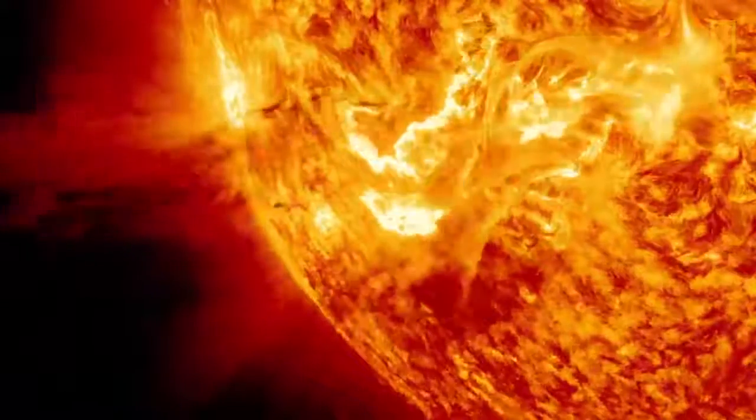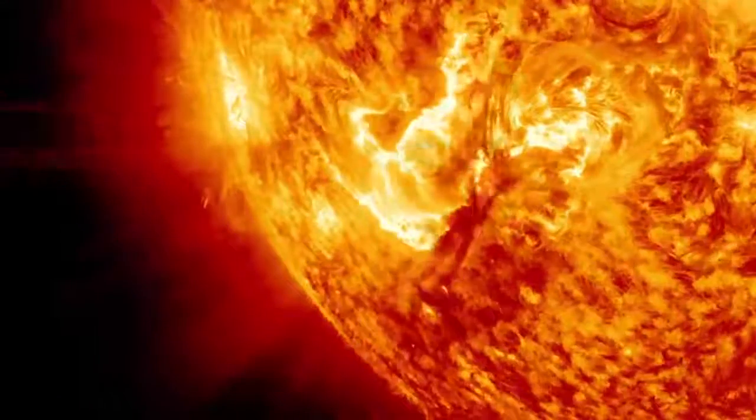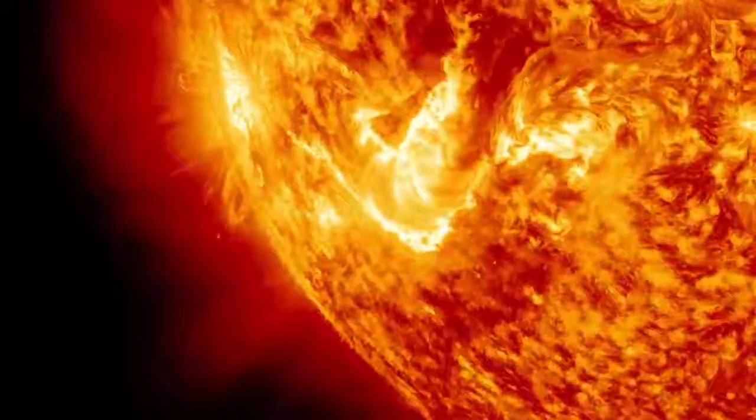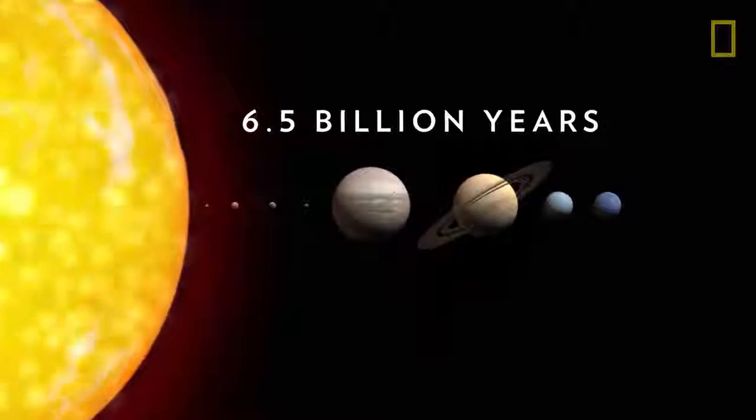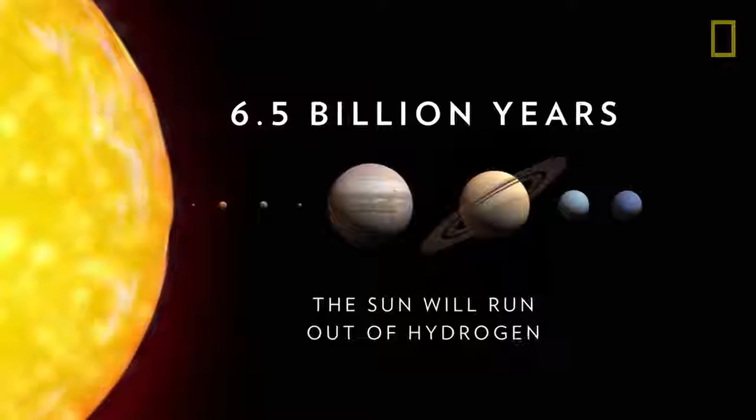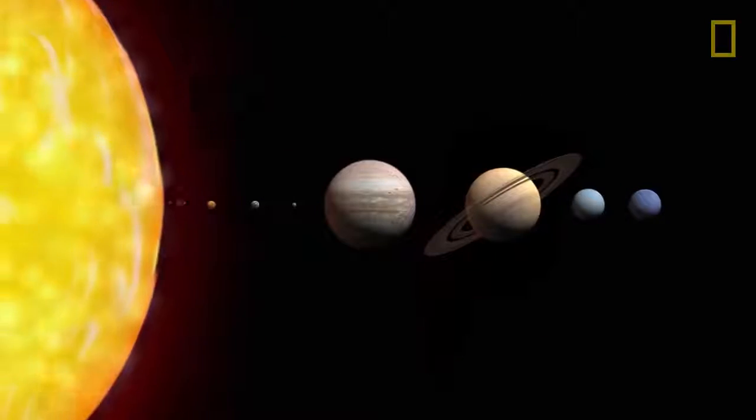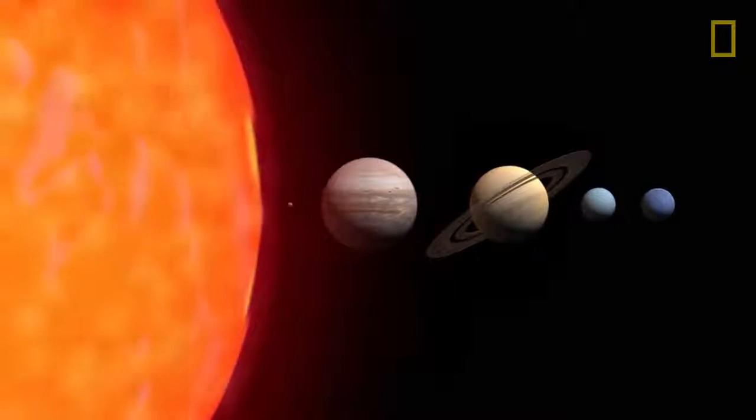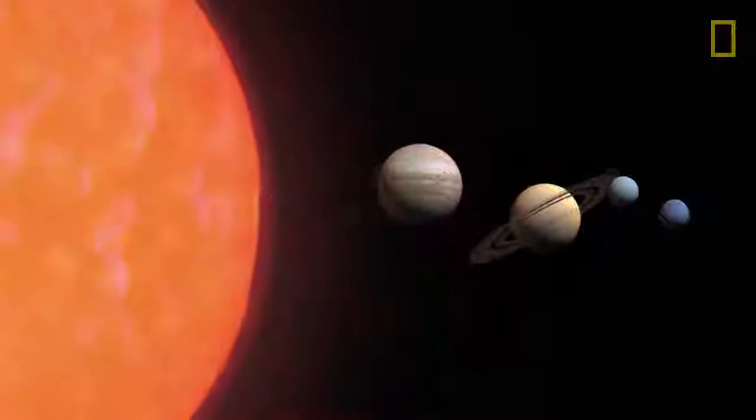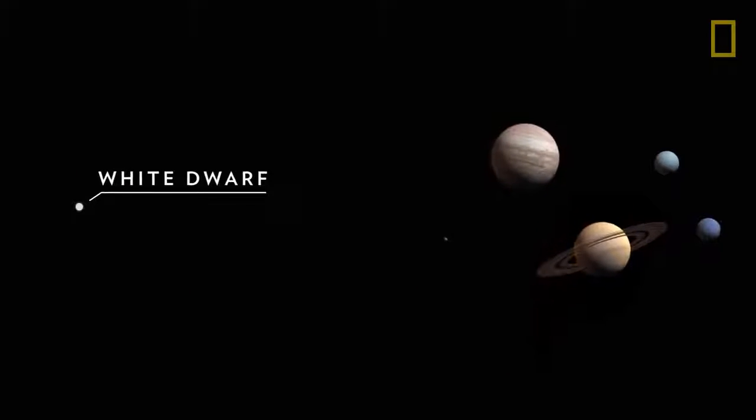Despite its size and strength, the Sun will not last forever. In about 6.5 billion years, it will run out of its hydrogen fuel, expand to envelop Mercury, Venus, and even Earth, and then collapse into a small star known as a white dwarf.